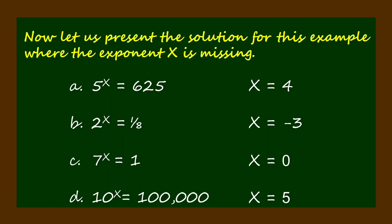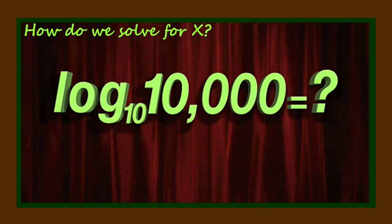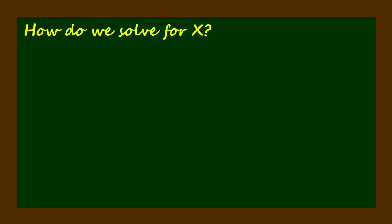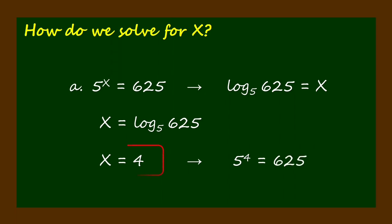Now let us present the solution for this example where the exponent x is missing. 5 to the x power equals 625 can be written in logarithmic form as the logarithm of 625 to the base 5 equals x. Therefore, x equals the logarithm of 625 to the base 5, which equals 4, because 5 to the fourth power equals 625.